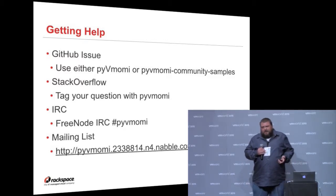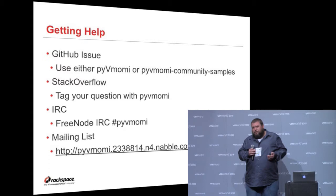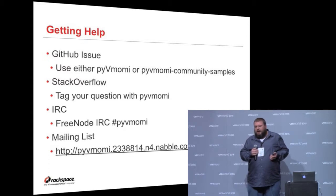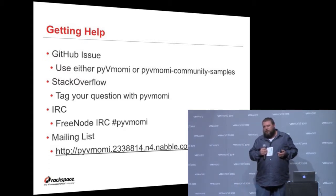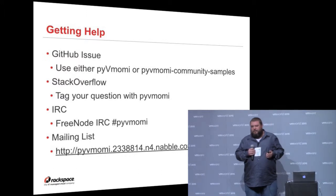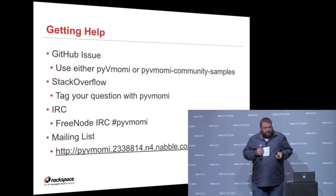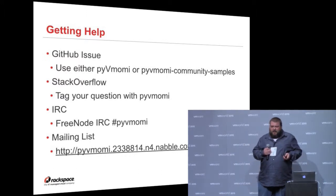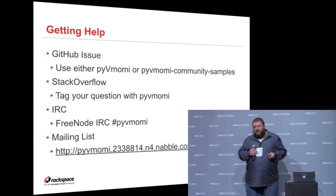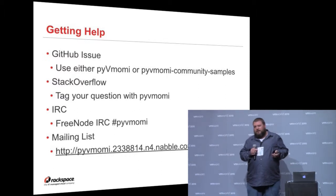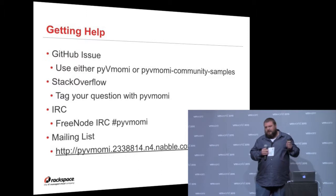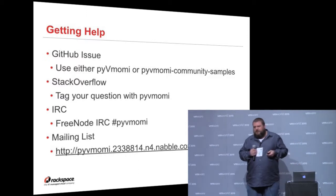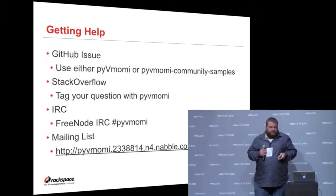You can also go to IRC. We have a fairly active IRC channel on Freenode — just join #pyvmomi. And if you're not into any of those things and you want a mailing list, we've got that too. Just hit up the nabble.com mailing list, ask your question, and eventually we'll get it answered.